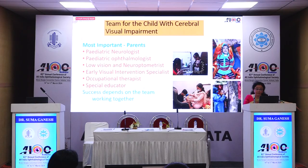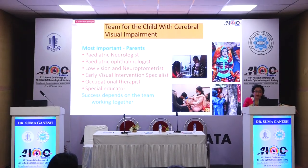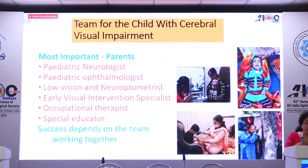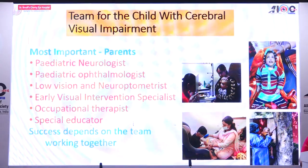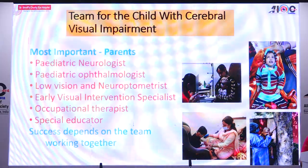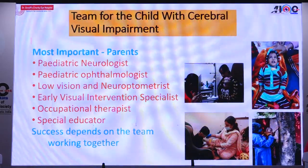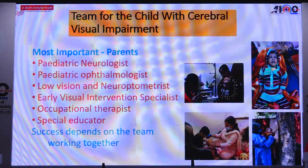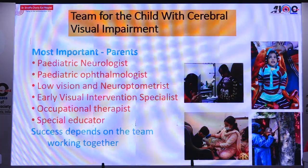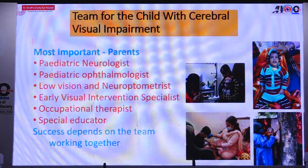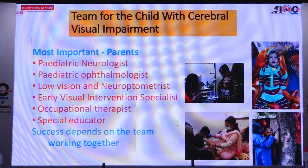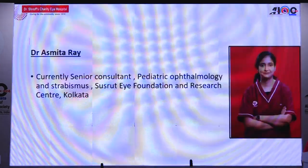We need a team for the child with cerebral visual impairment — we cannot do it without a team. We need parents cooperating most importantly, otherwise nothing works. A pediatric neurologist, pediatric ophthalmologist, low vision and neuro-optometrist, an early intervention specialist, occupational therapist, and special educator. Only when all of us work together can we get success.